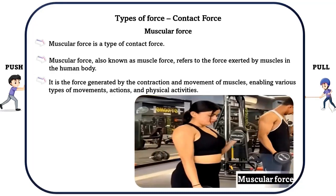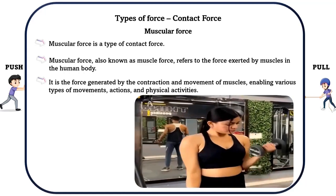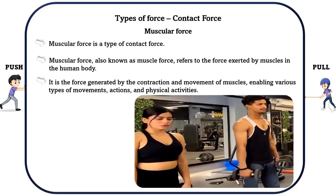Muscular force is a type of contact force, also known as muscle force. It refers to the force exerted by muscles in the human body — the force generated by the contraction and movement of muscles, enabling various types of movement, actions and physical activities. For example, when you lift an object, the muscles in your arms contract and exert a contact force on the object, allowing you to lift it. This force is transmitted through physical contact between your muscles and the object. Walking, running, and jumping are other examples of muscular force.